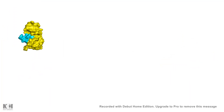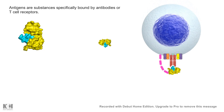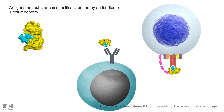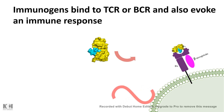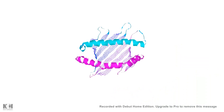Anything that binds to the T-cell receptor or the B-cell receptor, which is a membrane-bound antibody, is known as an antigen. Antigens can bind to the T-cell or B-cell receptor but not necessarily evoke an immune response. Those antigens which can bind to the T-cell receptor or B-cell receptor and can evoke an immune response are known as immunogens. That is how immunogens are differentiated from antigens.